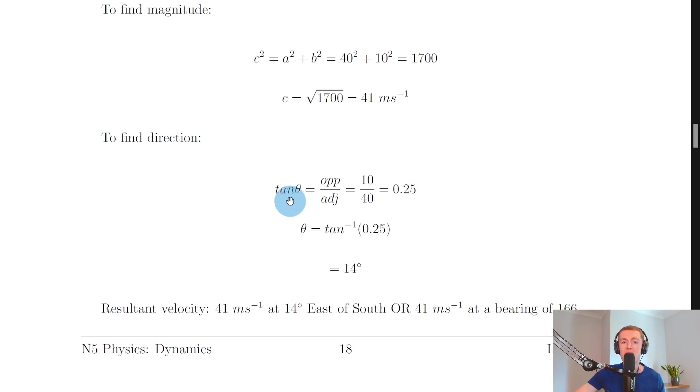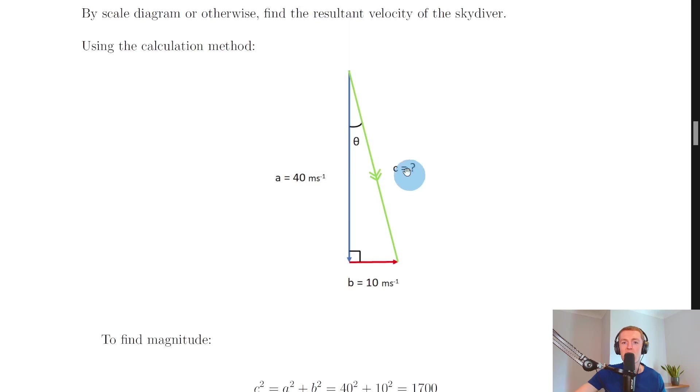So remember we always want to use tan theta equals opposite over adjacent to find the angle. So if we plug in the opposite and adjacent values if we look back at the sketch we've got opposite the angle is 10 meters per second and adjacent to the angle is 40 meters per second.